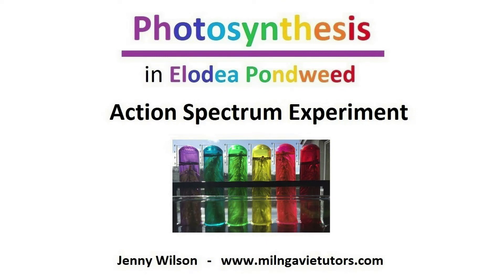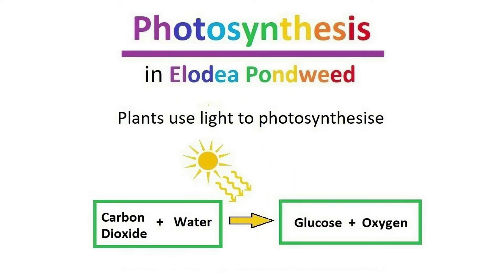We're going to do an experiment to look at photosynthesis in Elodea pondweed. You can use the results from the experiment to make your own action spectrum graph. Plants use light to photosynthesize — carbon dioxide and water are converted into glucose and oxygen using the energy from sunlight.